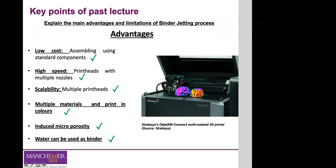Binder jetting is also one of the few systems that allows printing in color — FDM also does this, but binder jetting is commonly used to create prototypes or parts that require color. For some biological or medical applications, the porosity present due to the powder particles used to build the parts can be advantageous — for example, when creating tissue surrogates for bone.